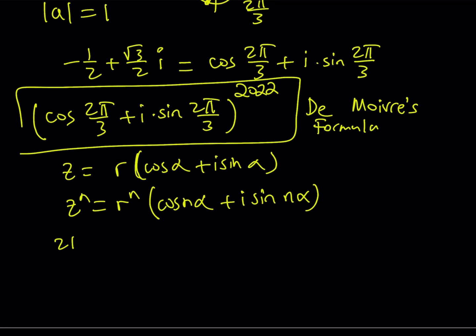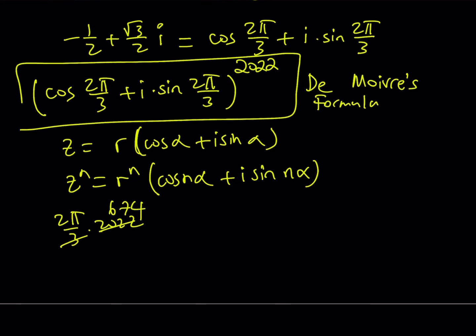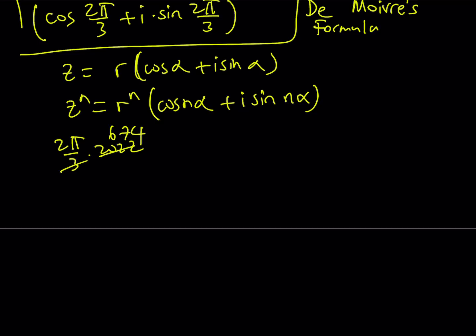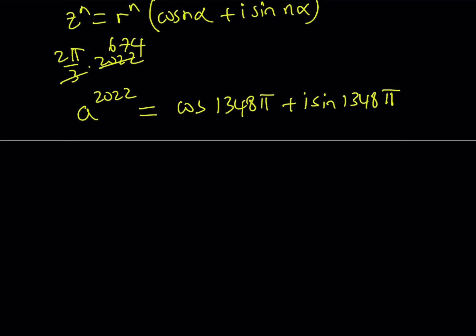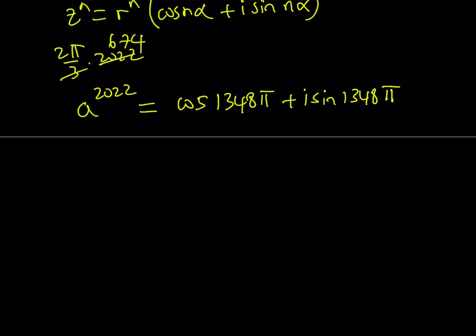Let's apply that formula here. When you multiply 2π over 3 by 2022 — because 2022 is actually 674 times 3 — that gives you an integer multiple of π. Not only that, but you're also going to get an even multiple of π. So a to the power of 2022 equals cosine of 1,348π plus i sine of 1,348π. Some people write cosine plus i sine as 'cis', but that aside, this is my number — though it's still not a very simple answer, so we can simplify it.